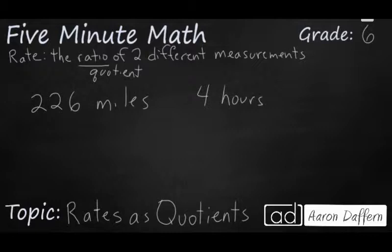What is the rate of speed? Typically when we're talking about speed, we talk about it in mph or miles per hour. So we're looking at the ratio of 226 miles over four hours. And so here is where we can find our quotient.